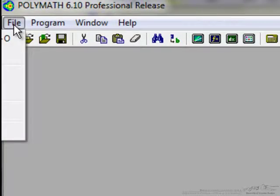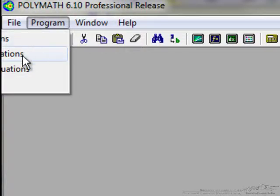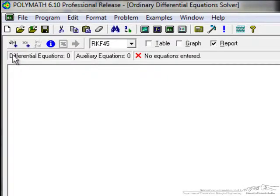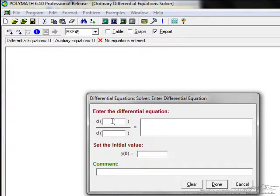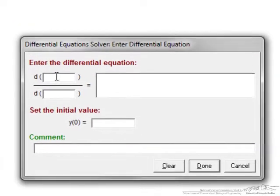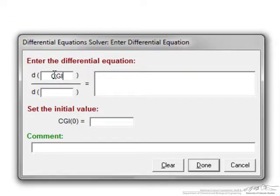I've opened Polymath. I'm going to go to the program differential equations and start by entering a new differential equation. First I'll put in the one for the concentration in the GI tract where my independent variable is time.